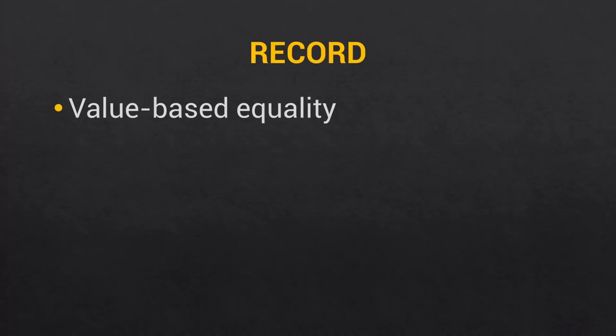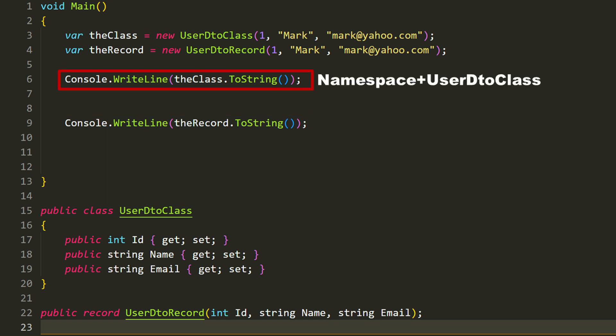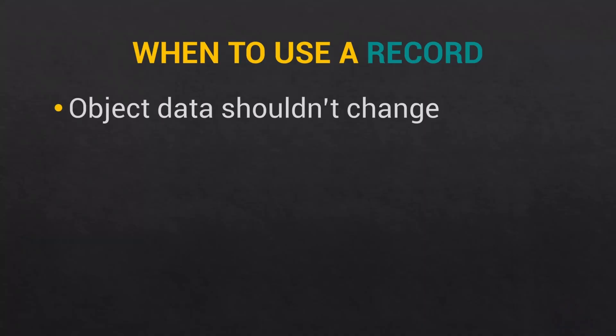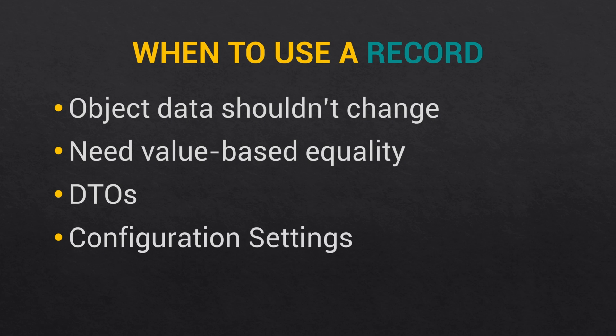Because records are designed to be data structures, they have a very useful ToString method. If you call ToString on a record you actually get an output of each of the properties with their values, as opposed to calling ToString on a class where you just get the name of the class and the namespace. You should use a record when your object data isn't going to change and when you need value-based equality. Really, use records for DTOs and for configuration settings that need to be passed around.